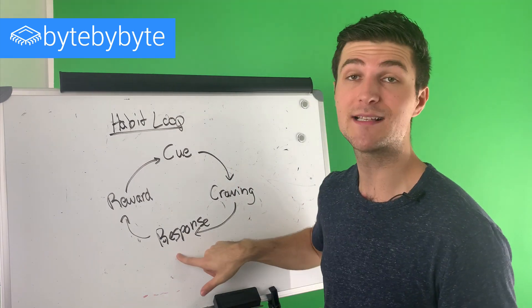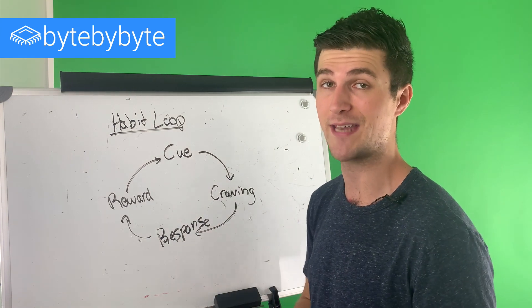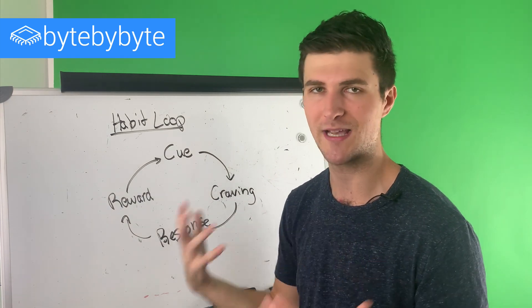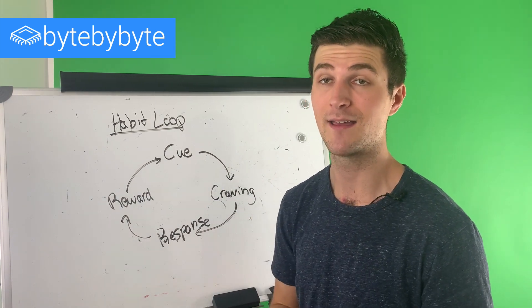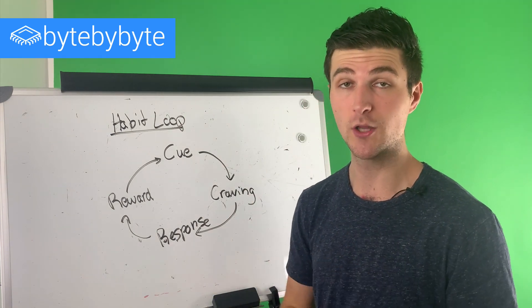Next, I make some sort of response. I actually go and make myself a snack. And then finally, there is a reward, which is that I get to eat that popcorn, I get to eat those chips, I get to eat whatever I'm having as a snack. And so this is a really simple example of what a habit actually looks like.